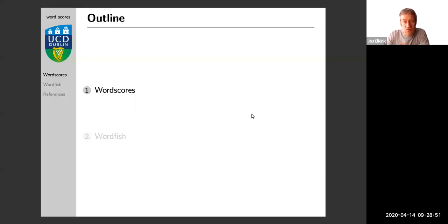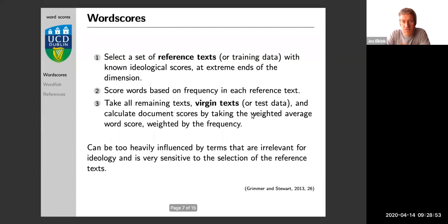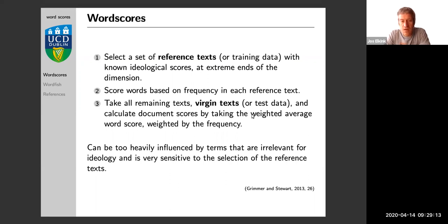The first method I want to discuss is Wordscores. Wordscores was developed at the beginning of this century by two professors at Trinity College Dublin, Michael Laver and Kenbinot. The basic idea is relatively straightforward. We might want to identify an ideological dimension on which we can set a number of documents — for example, we might want to take party manifestos, which was certainly the application the authors had in mind.